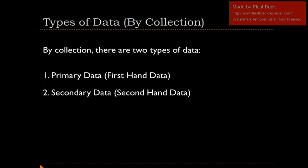We have types of data. By collection, we have two types of data. Number one is primary data. Primary data — the name of the course — which is first-hand data. Primary data means first-hand data.